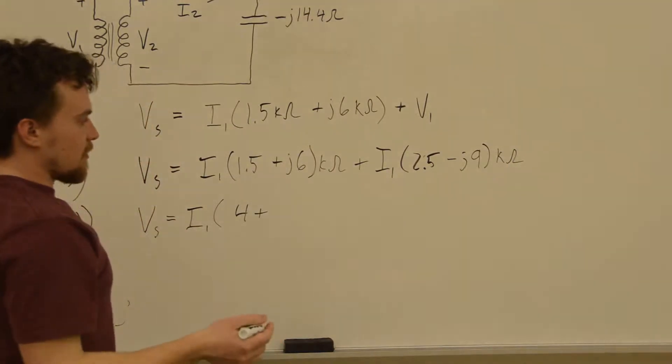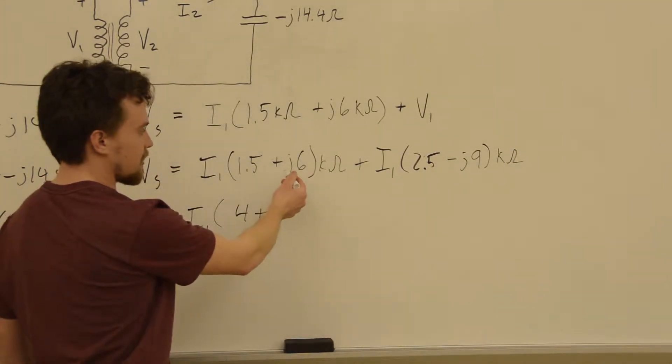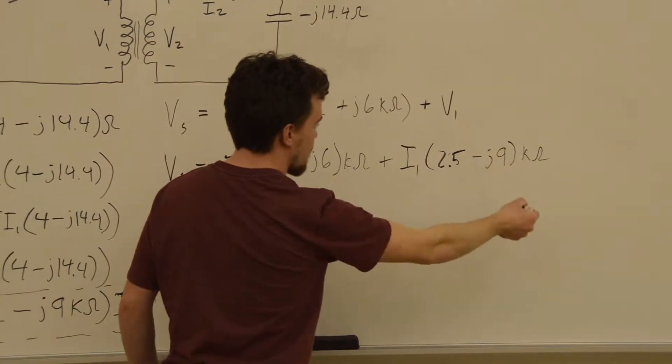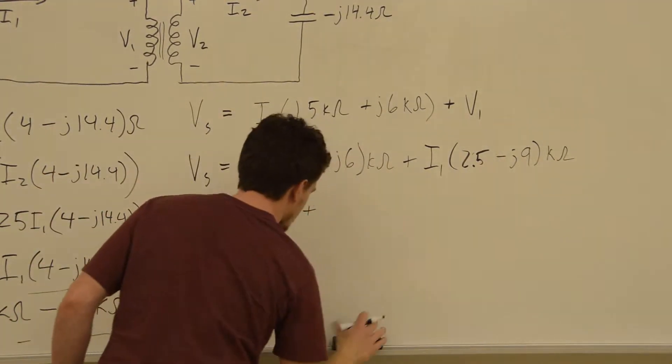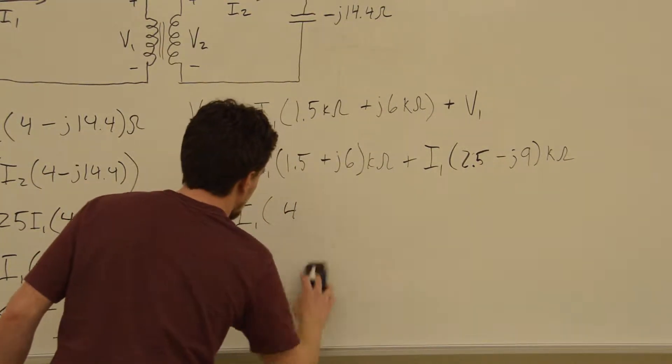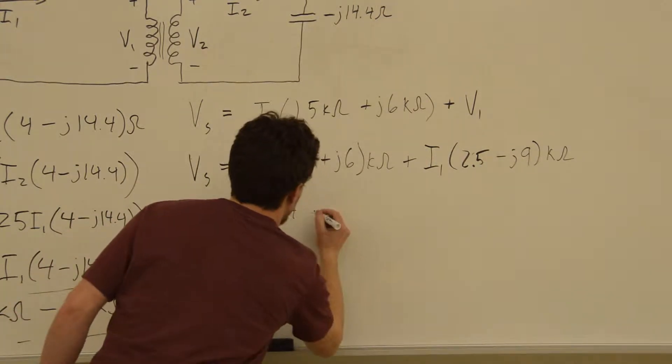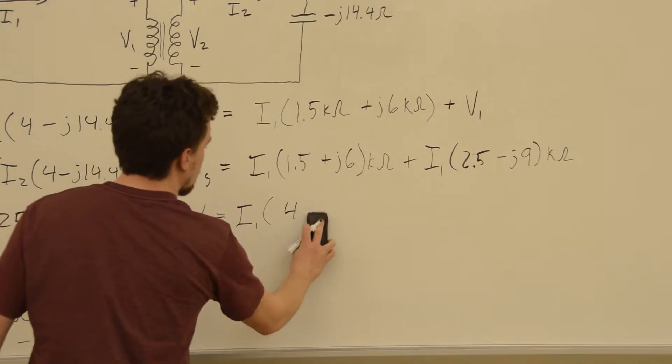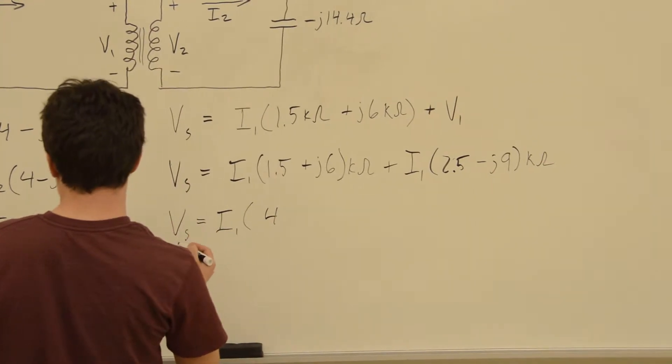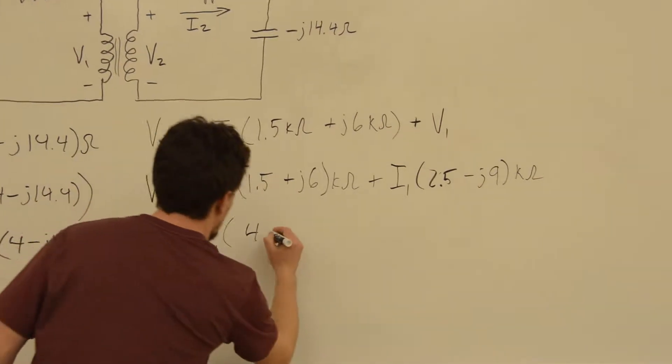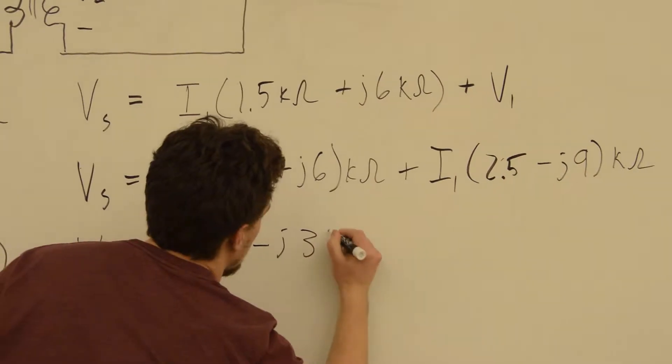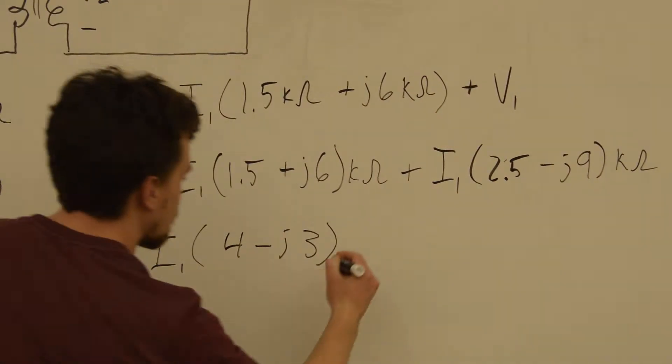So let's see if I do this right. Vs would be equal to I1 times, so these all add 2.5 plus 1.5 is 4. Now it's still in kilo ohms. And we have plus J6 and we have minus J9. So that would be minus J3. That's in kilo ohms.